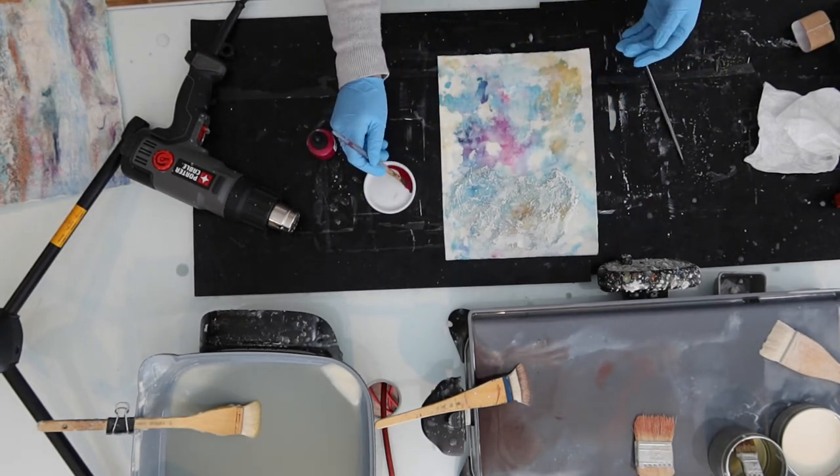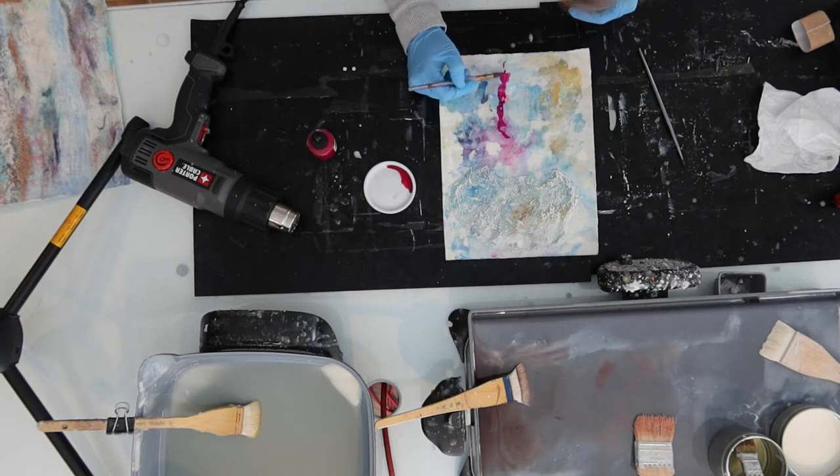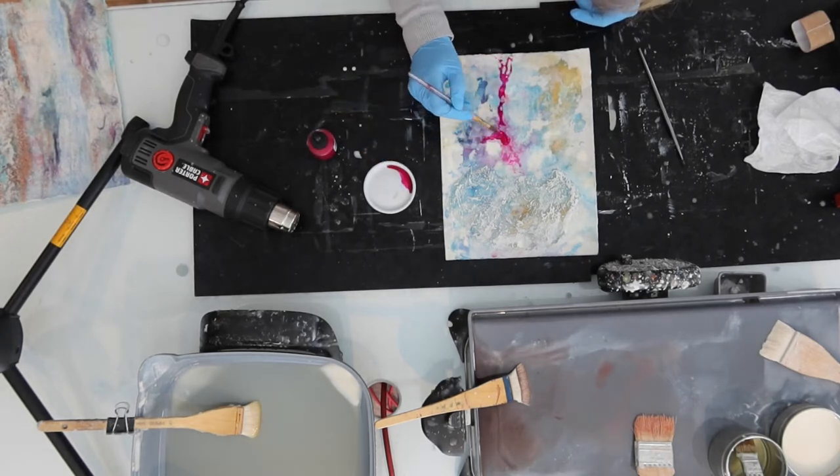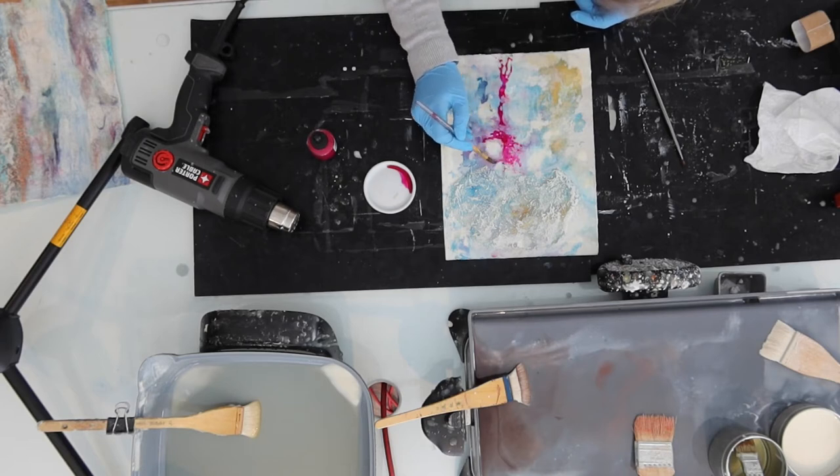So I'm just picking up on some of that background color that was already there in the India ink, the pink India ink, and I'm painting in kind of a very loose trunk-like shape.